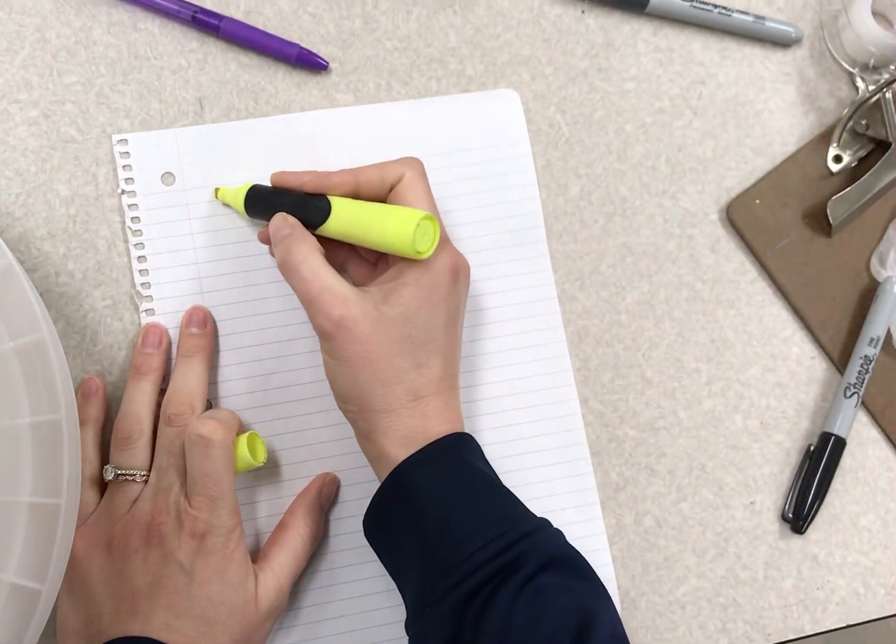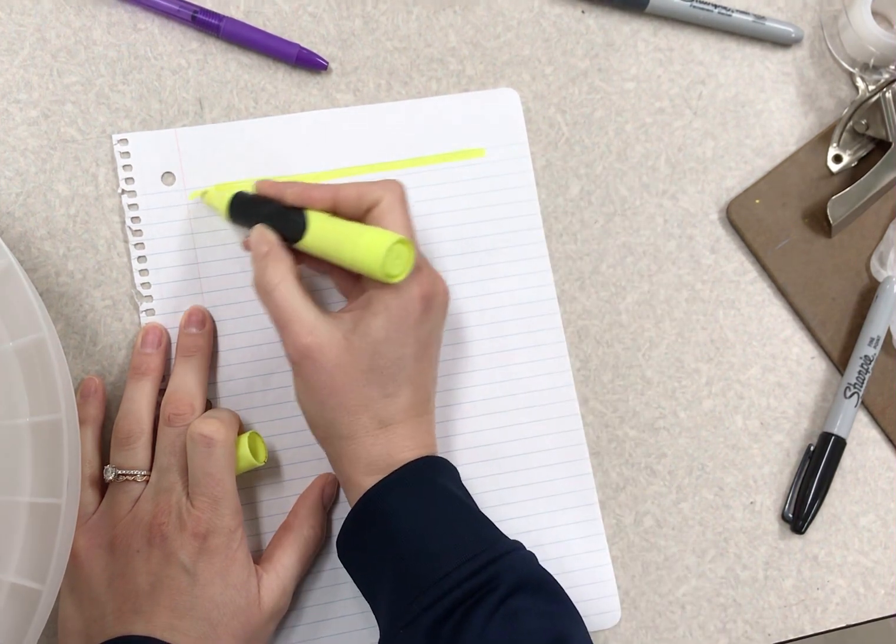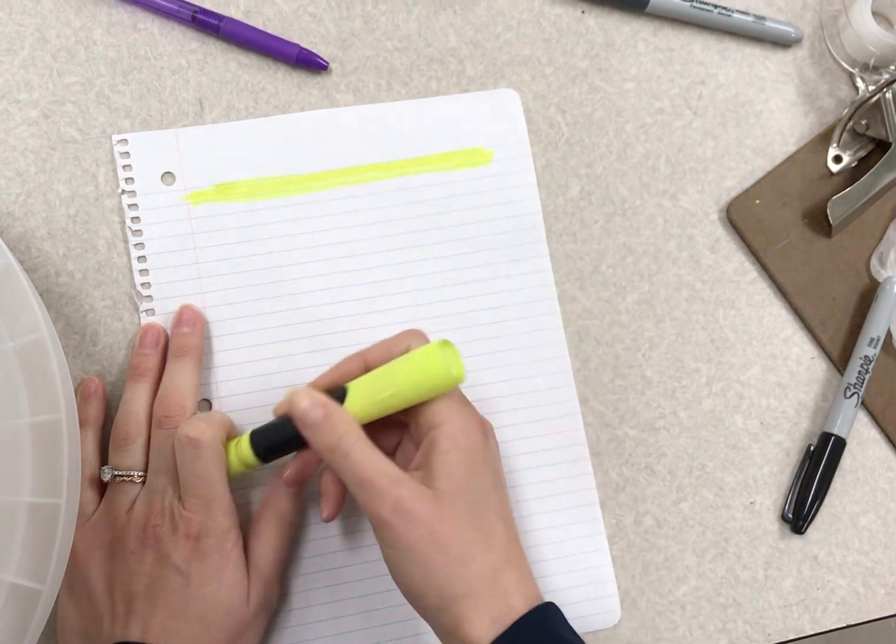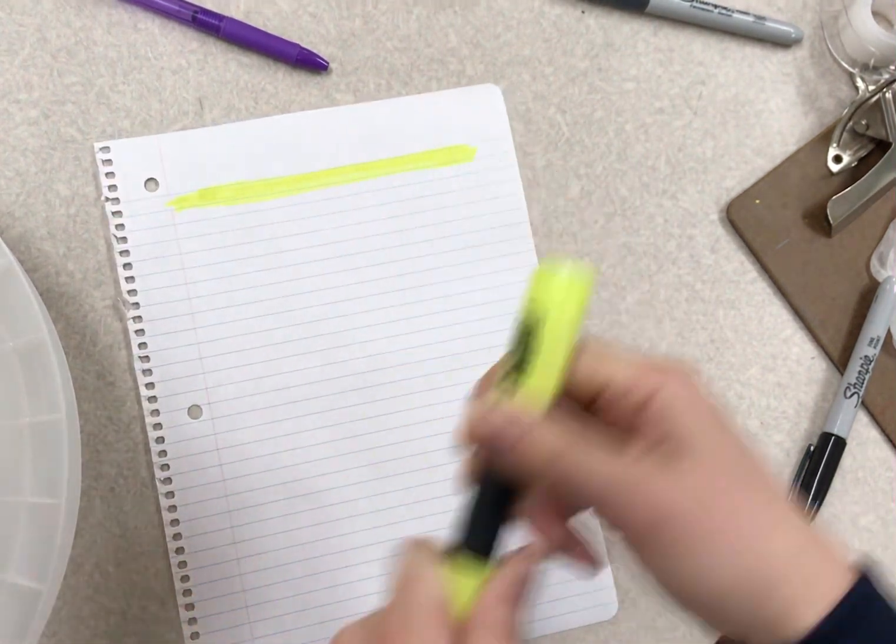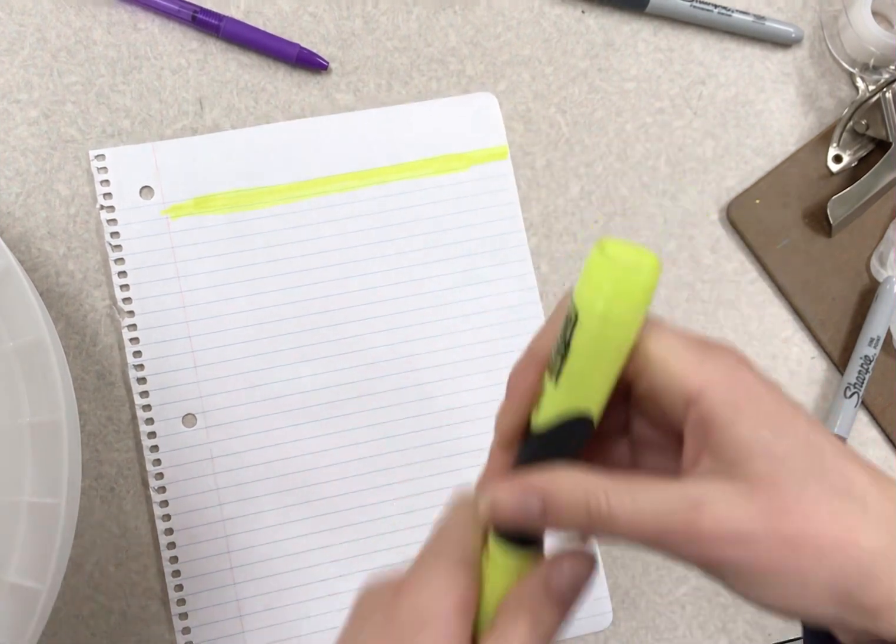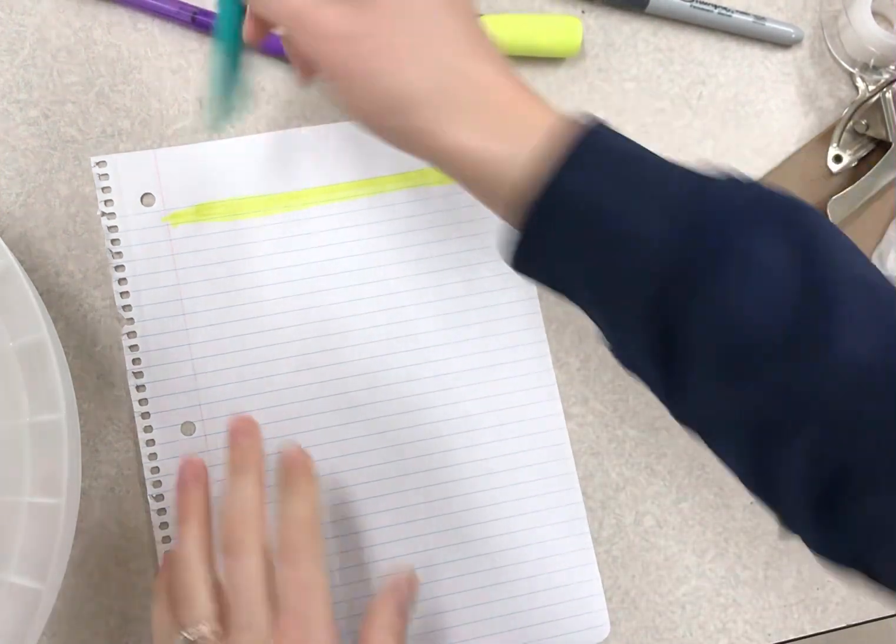So the first thing you're going to do is go line by line and add color. Now I want you to really go from side to side. I'm going to choose not to get that red line in there, but you might choose something different.